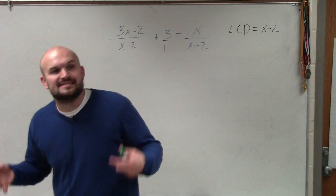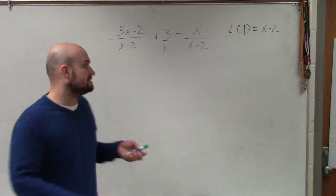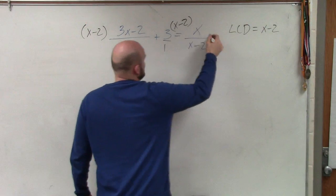So in this case, instead of combining, I'm now going to eliminate the fractions. So to do that, I multiply everything by x minus 2. Every single term, I should say.